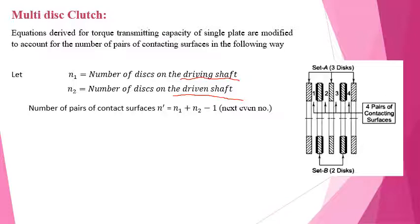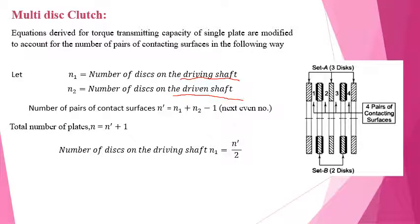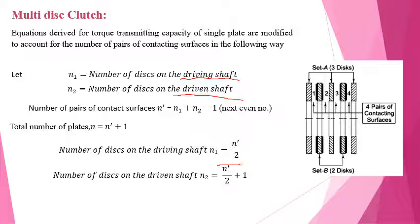From the figure, there are five plates or discs: Set A consists of three discs and Set B consists of two discs, giving a total of five. The number of pairs of contacting surfaces is five minus one, which equals four. The number of discs on the driving shaft is given by n' divided by 2, and the number of discs on the driven shaft is n' divided by 2 plus one — so there is one extra plate on the driven shaft.